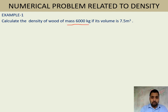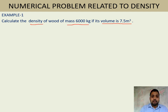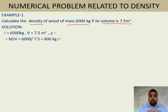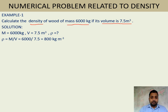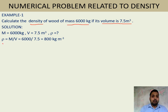Second quantity given is volume: volume = 7.5 m³. We have to find density. In the solution, the data given part lists m = 6000 kg, V = 7.5 m³, and ρ (density) is what we need to find. The formula is: density = mass / volume, or ρ = m / V.